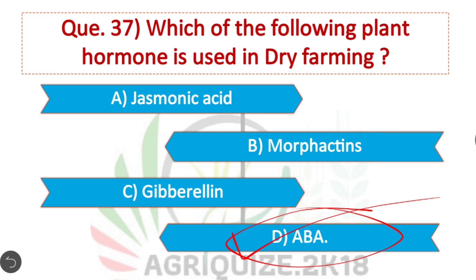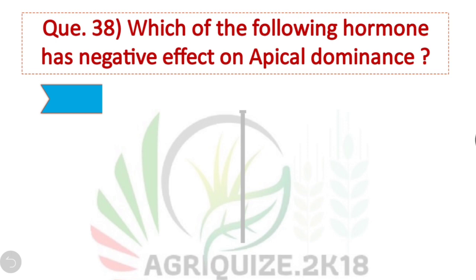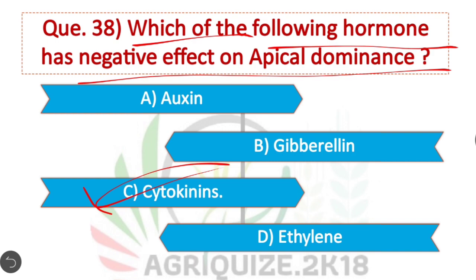Question 38: Which hormone has a negative effect on apical dominance? Cytokinins have a negative effect on apical dominance. Option C is correct.